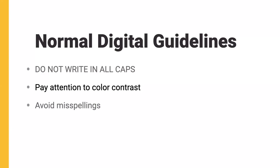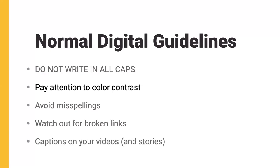Avoid misspellings — it's difficult for everyone, including screen reader users who may have a word spelled out letter by letter just because it was misspelled. Watch out for broken links; there's nothing more annoying for any user than clicking a link expecting a video and landing on a 404 page. Finally, make sure you have captions for all your videos and stories. Tools like YouTube offer closed captioning that you can edit for accuracy.